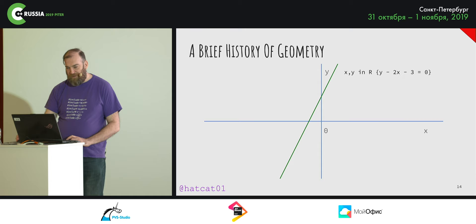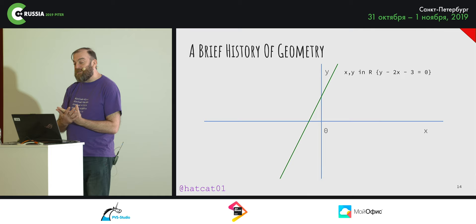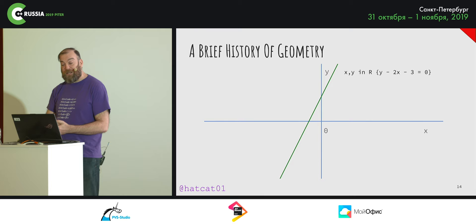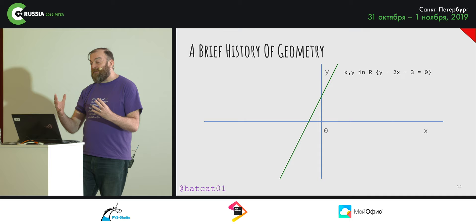This can be extended into three dimensions by adding an additional axis, or indeed any number of dimensions, but I'm not going to cover that here. The treatment of a torus as a four-dimensional object blew my head off at university. We're going to stay away from that sort of thing. But now that we have algebra to work with, we can start doing work using equations and models rather than pictures.